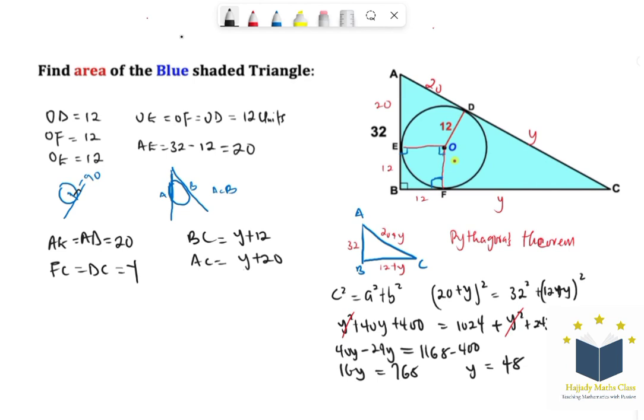So I've gotten the value for my Y to be 48. So with this we have that BC, which is Y plus 12, which is 48 plus 12, is going to be 60 units. And also AC, which is Y plus 20, which is 48 plus 20, which is also going to be 68.